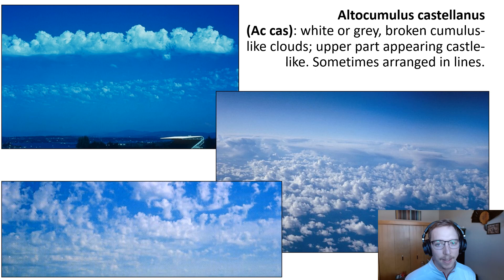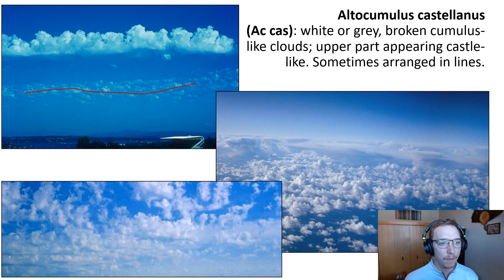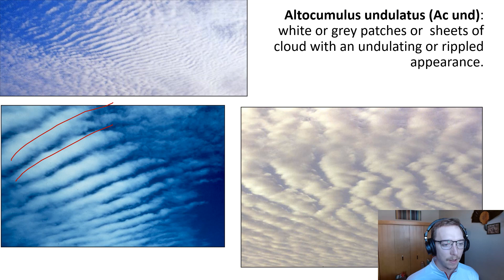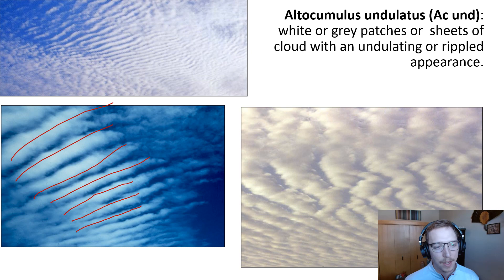Then we've got altocumulus castellanus, or AC cast clouds — white or gray broken cumulus-like clouds with an upper portion that appears almost castle-like, with tall towering forms sometimes arranged in linear patterns. Then altocumulus undulatus, or AC und — white or gray patches or sheets of clouds with an undulating or rippled appearance, resulting from some type of atmospheric convection or rolling process leading to a linear formation of clouds.